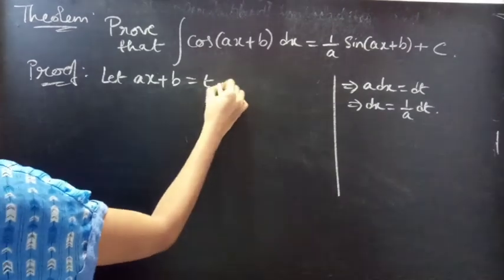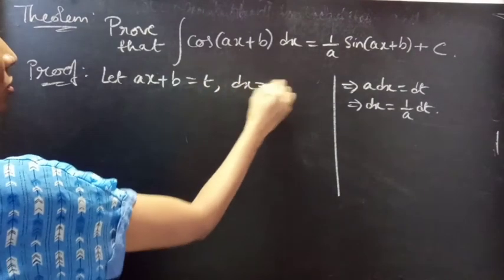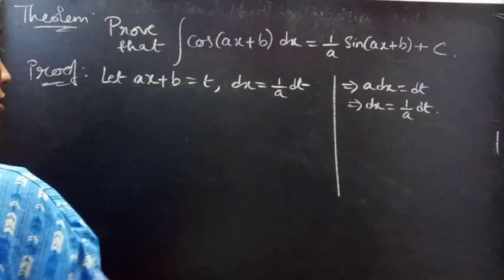Let ax plus b equals to t. Then, dx equals to 1 by a into dt.